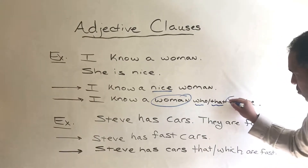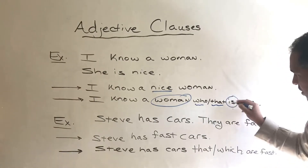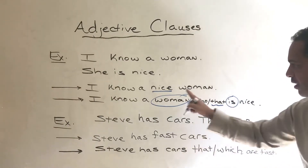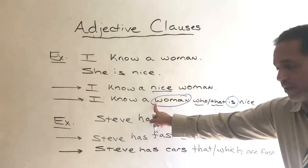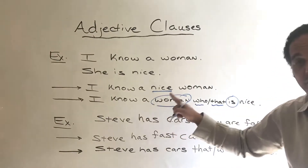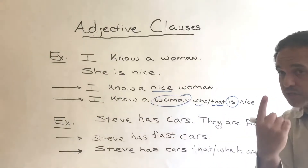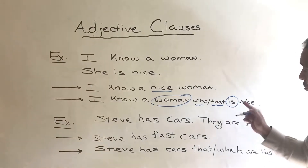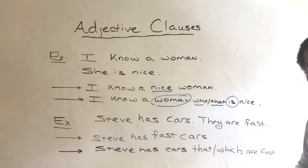Make sure this verb agrees with the subject — that's important. If I say 'woman,' it's one, so I should say 'is.'